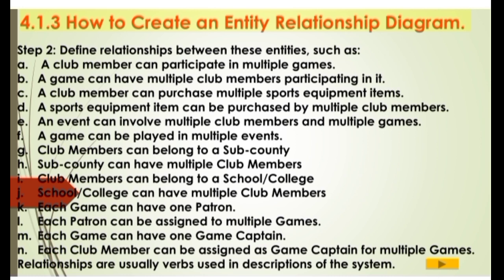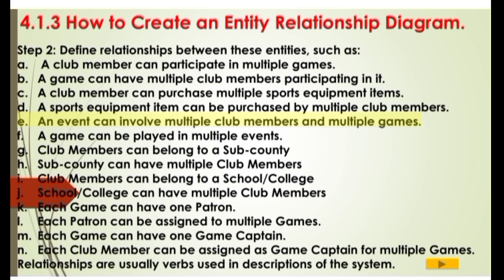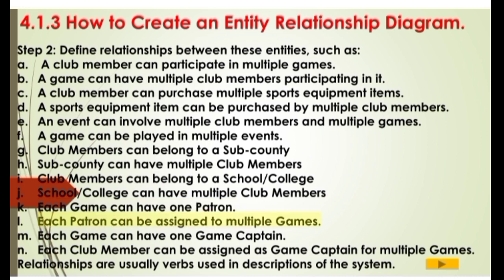Step 2: Define relationships between these entities, such as: A. A club member can participate in multiple games. B. A game can have multiple club members participating in it. C. A club member can purchase multiple sports equipment items. D. A sports equipment item can be purchased by multiple club members. E. An event can involve multiple club members in multiple games. F. A game can be played in multiple events. G. Club members can belong to a sub-county. H. A sub-county can have multiple club members. I. Club members can belong to a school/college. J. A school/college can have multiple club members. K. Each game can have one patron. L. Each patron can be assigned to multiple games. M. Each game can have one game captain. N. Each club member can be assigned as game captain for multiple games. Relationships are usually verbs used in descriptions of the system.